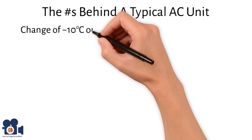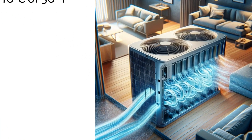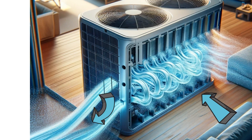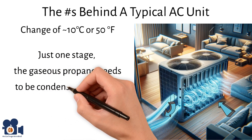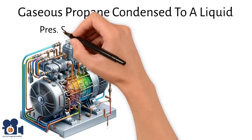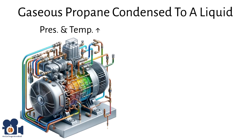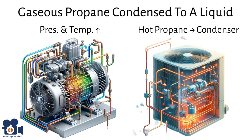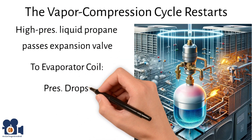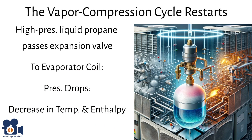This change of approximately 10 degrees Celsius or 50 degrees Fahrenheit is what allows refrigeration to work, because the AC unit can blow air over the colder propane, which cools that air and pumps it into your room. Keep in mind this is just one stage. The gaseous propane needs to be condensed back to a liquid so the cycle repeats. To do this, the vaporized propane is compressed by a compressor, increasing its pressure and temperature. It's then sent to a condenser where propane transfers its heat to air pumped outside — which is why AC units discharge hot air or feel warm. Finally, high-pressure liquid propane passes through an expansion valve back to the evaporator coil, where pressure drops suddenly, leading to a decrease in temperature and enthalpy, starting the cooling process again.